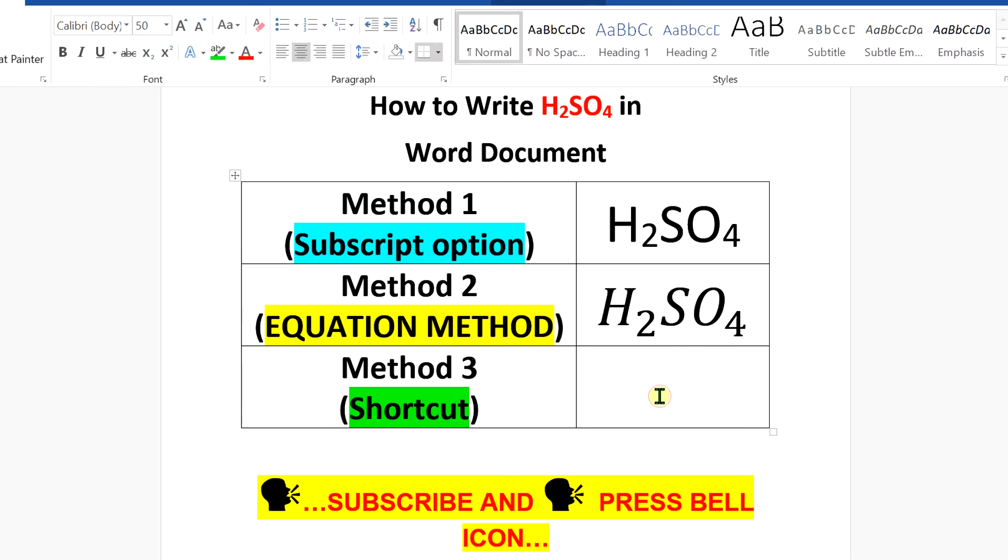Now the last method is a shortcut. Select the number 2, press Ctrl on your keyboard, select the number 4, and now release the Control button. Press Ctrl and press equals at the same time to subscript the numbers in H2SO4.